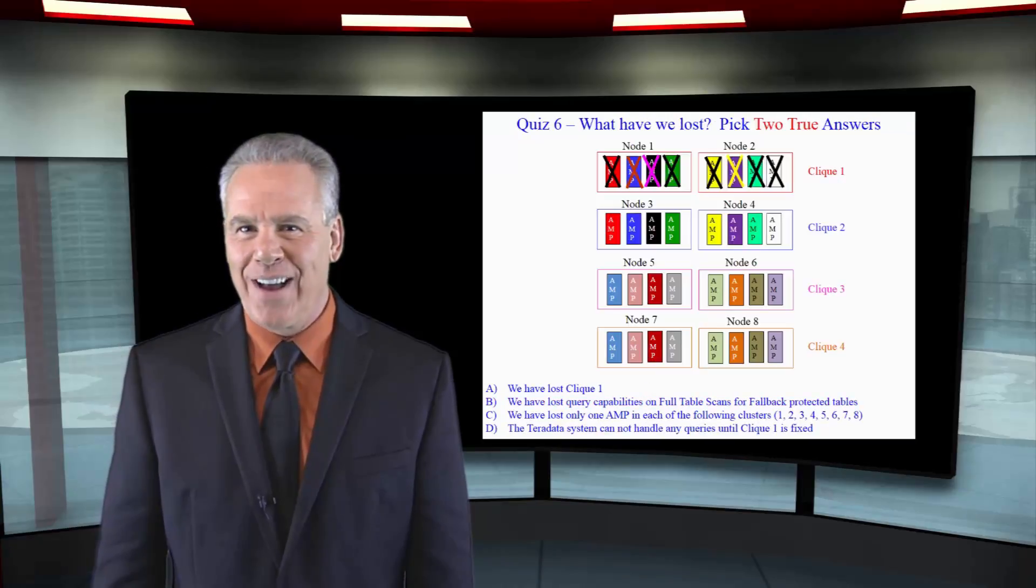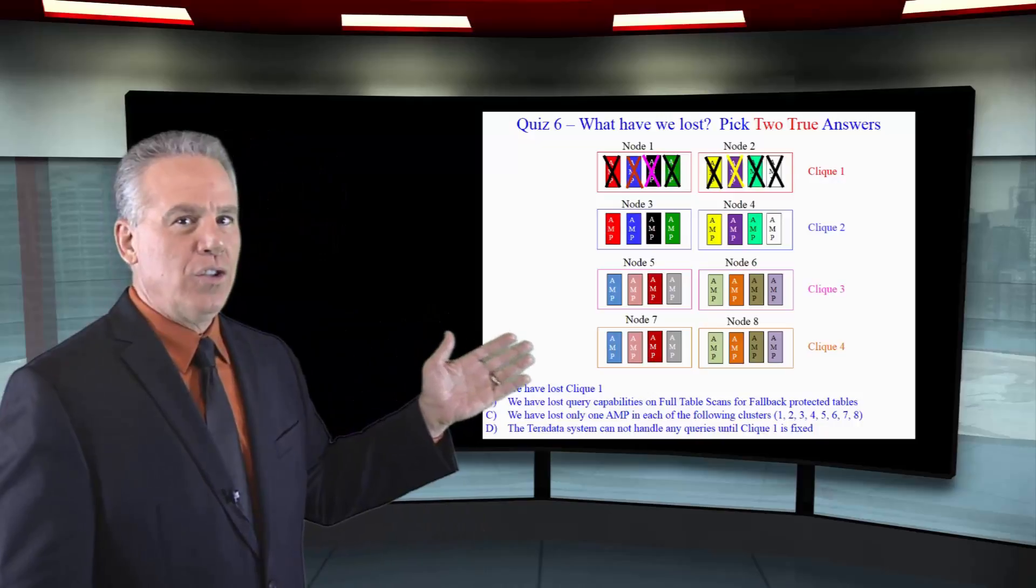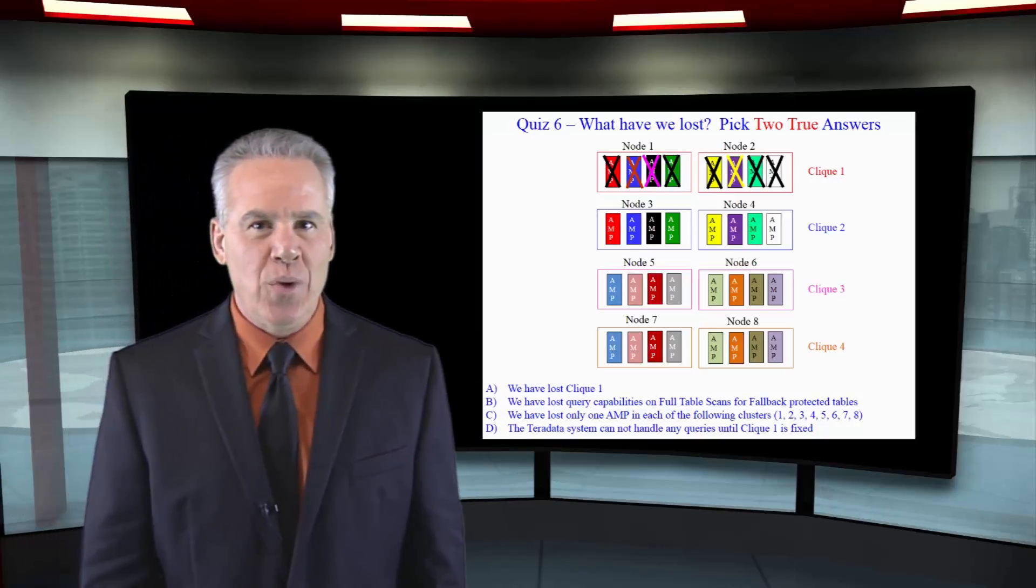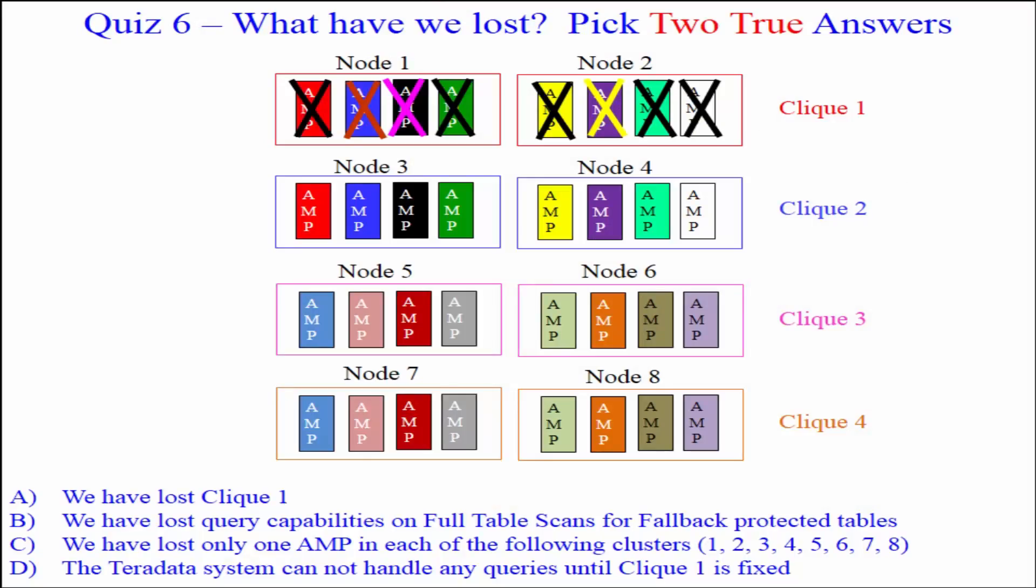What have we lost? In this example here, I want you to pick two answers that are true. Which two answers are true? A: We have lost clique 1. B: We have lost query capabilities on full table scans for fallback protected tables. C: We have lost only one AMP in each of the following clusters.